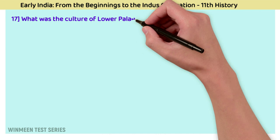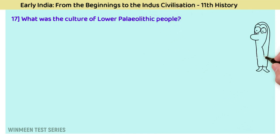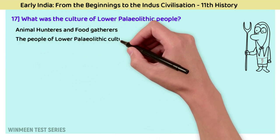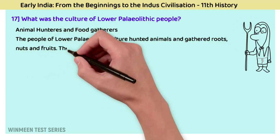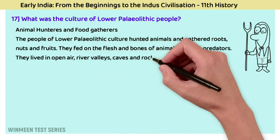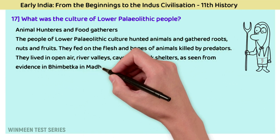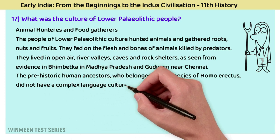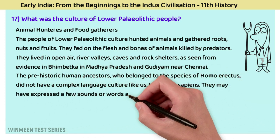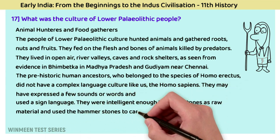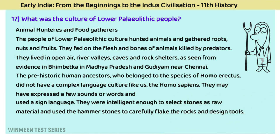Question 17: What was the culture of Lower Paleolithic people? The answer is animal hunters and food gatherers. People of Lower Paleolithic culture hunted animals and gathered roots, nuts, and fruits. They also fed on flesh and bones of animals killed by predators. They lived in open-air river valleys, caves, and rock shelters as seen from evidence in Bhimbetka, Madhya Pradesh, and Gudiyam near Chennai. They belonged to Homo erectus, lacked complex language, and were intelligent in selecting stones and using hammer stones to design tools.